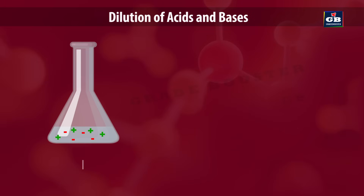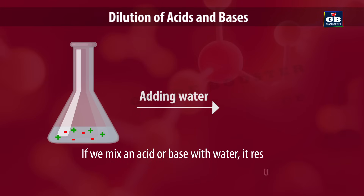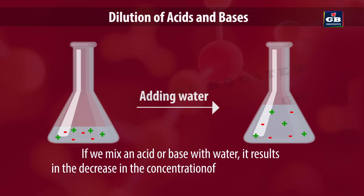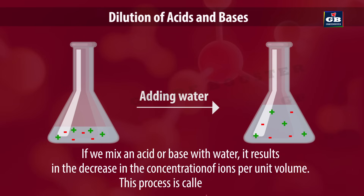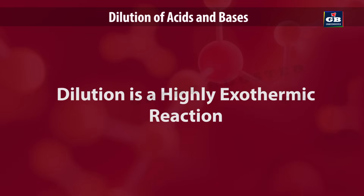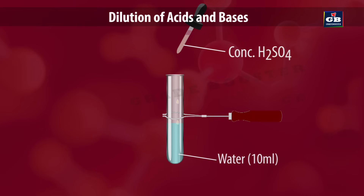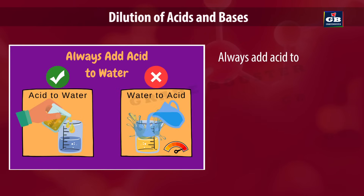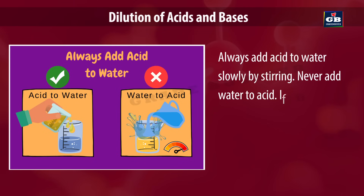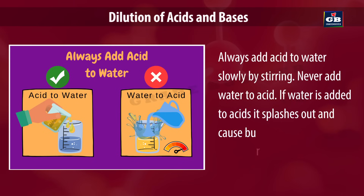Dilution. If we mix an acid or base with water, it results in a decrease in the concentration of ions per unit volume — this process is called dilution. Dilution is a highly exothermic reaction, meaning when we add an acid or base to water, large amounts of heat are released. So always add acid to water slowly by stirring. Never add water to acid, as it splashes out and causes burns due to local heating.